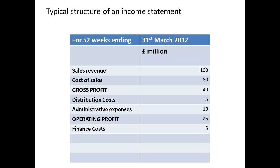Finally, we enter any finance costs — we will enter a figure of 5 million. This means we can now determine the profit before any taxation: the figure will be 20 million. We will assume profit has been taxed at 25%, so 25% of 20 million is 5 million. Subtracting this figure we are left with the profit for the period. This completes our income statement.